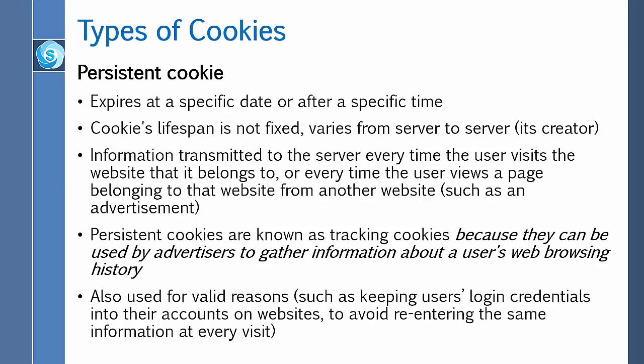Now let me talk about persistent cookie. It expires at a specific date or after a specific time. The cookie's lifespan is not fixed; it varies from server to server, basically its creator. Information is transmitted to the server every time the user visits the website it belongs to, or every time the user views a page belonging to that website from another website such as an advertisement. Persistent cookies are also known as tracking cookies because they can be used by advertisers to gather information about a user's web browsing history. They are also used for valid reasons such as keeping users' login credentials into their accounts on websites to avoid re-entering the same information at every visit.